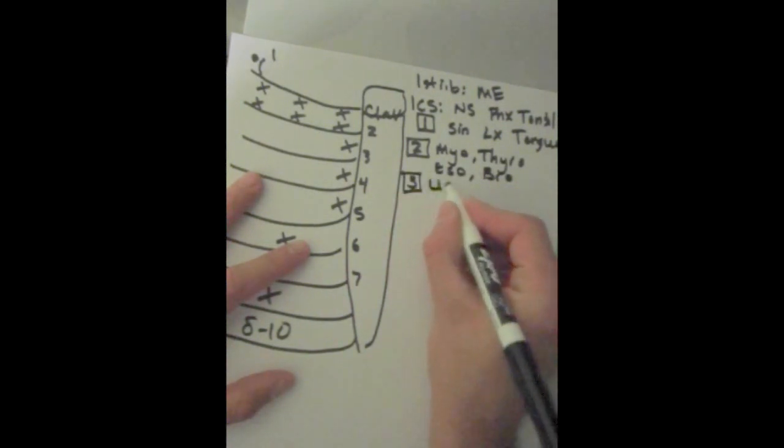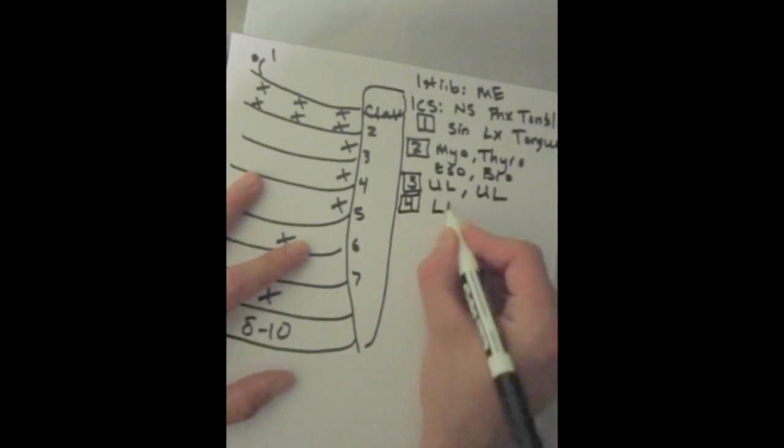Third intercostal space, upper limb and upper lung. Fourth, we've got to have a lower lung.